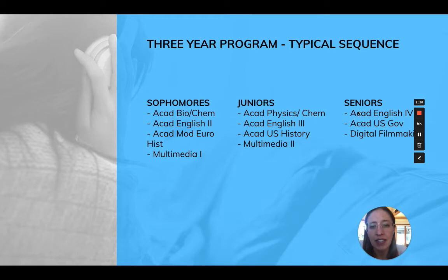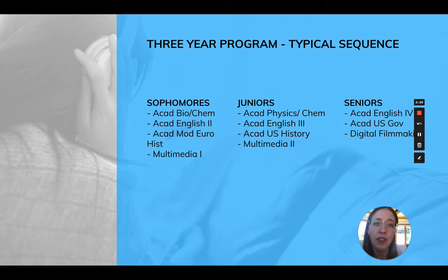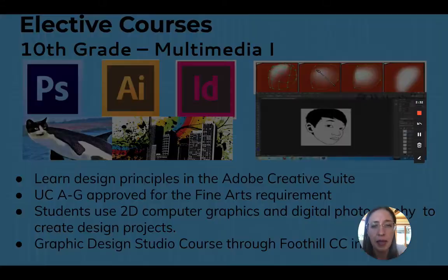Sophomores will have science, English, history, and the elective multimedia. Juniors will have science, English, U.S. history, and multimedia. And then seniors will have English, government economics, and digital filmmaking.